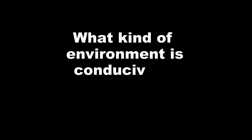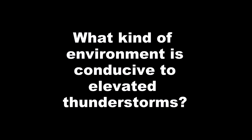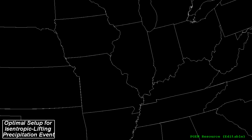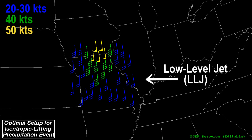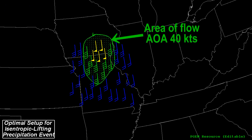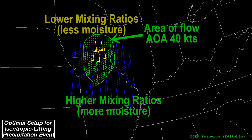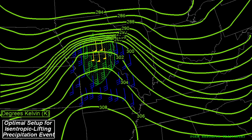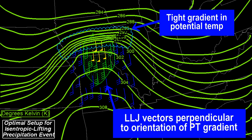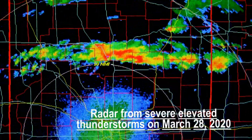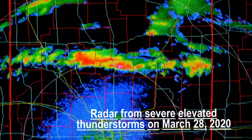What kind of environment is conducive to elevated thunderstorms? To get widespread precipitation from isentropic lifting, you typically want a low-level jet of moderate or strong intensity — say 40 knots — advecting higher mixing ratio air toward an area with lower mixing ratios. This low-level jet should have wind vectors oriented perpendicular to a tight pressure slope indicated by gradient and potential temperature surfaces, which will support more forceful lifting. Add that with sufficient MU CAPE, and your elevated storms should be rocking and rolling.